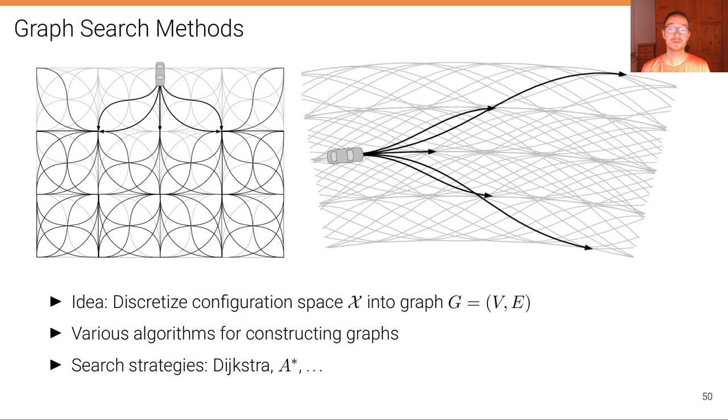An alternative to variational methods is to use graph search methods as the ones we have discussed before, such as Dijkstra or A star. But in order to use them, we first have to discretize the configuration space x into a graph comprising vertices and edges. There are various algorithms in the literature for constructing such graphs. Here's a simple example for parking maneuvers on the left, where the configuration space is discretized based on this grid structure here. On the right you can see different lanes on the highway where lane change maneuvers are modeled based on a discretization of the configuration space. Each of these gray and black trajectories are trajectories that can be taken by the vehicle.